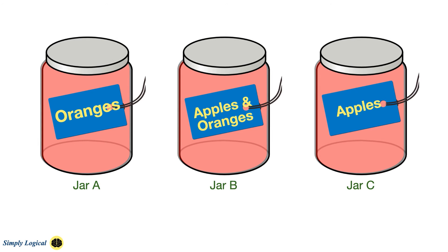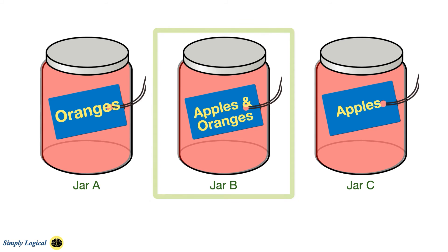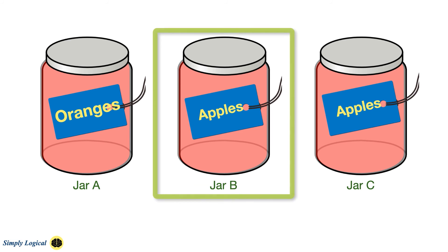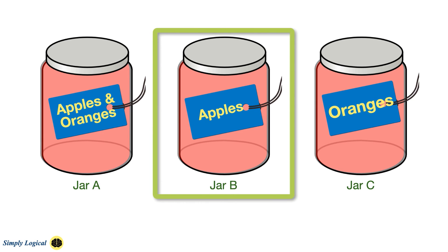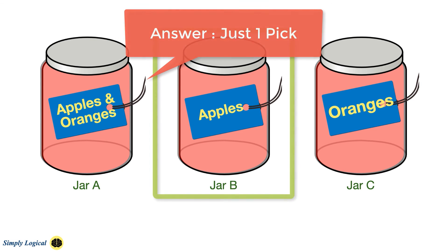This puzzle also requires similar logic to what I explained earlier. Suppose you pick from the jar labelled apples and oranges and you get an apple from it. That means that jar should be the apple jar, as it is incorrectly labelled. Now the jar labelled oranges has to be the mixed jar, as it cannot be the oranges jar since they are wrongly labelled, and the jar labelled apple has to be oranges. A similar scenario applies if an orange is taken out from the jar labelled apples and oranges. So you need to pick just one fruit from the jar labelled apples and oranges to correctly label the jars.